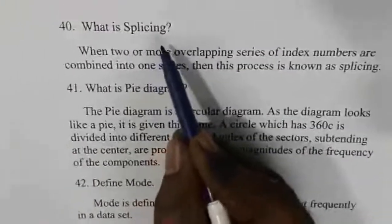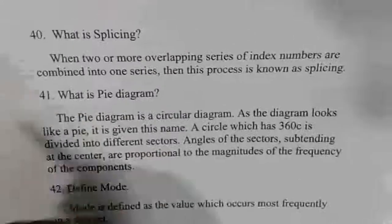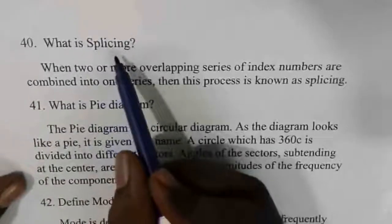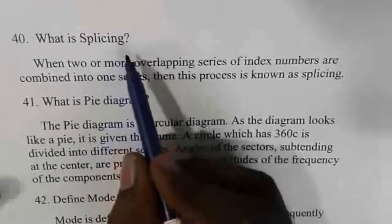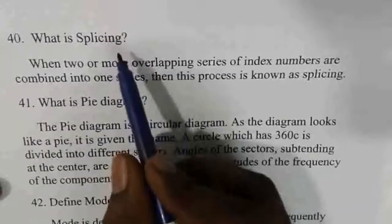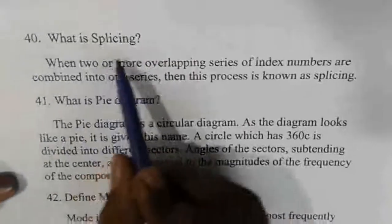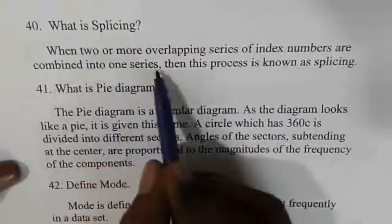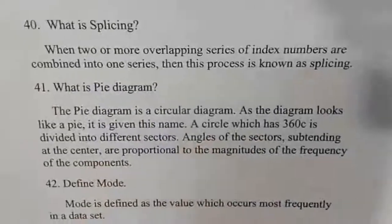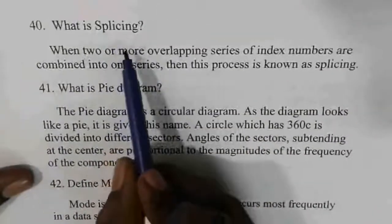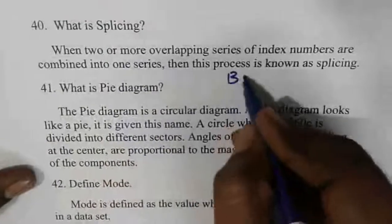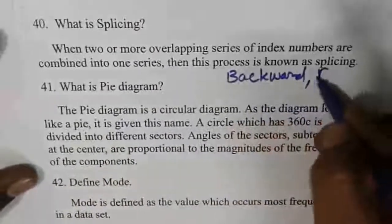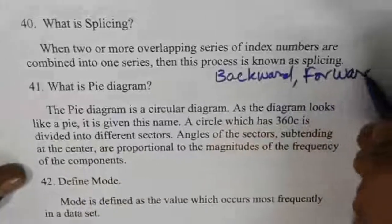Splicing is a concept in index numbers. Two or more overlapping series of index numbers are combined into one series. There are two types of splicing: forward splicing and backward splicing.